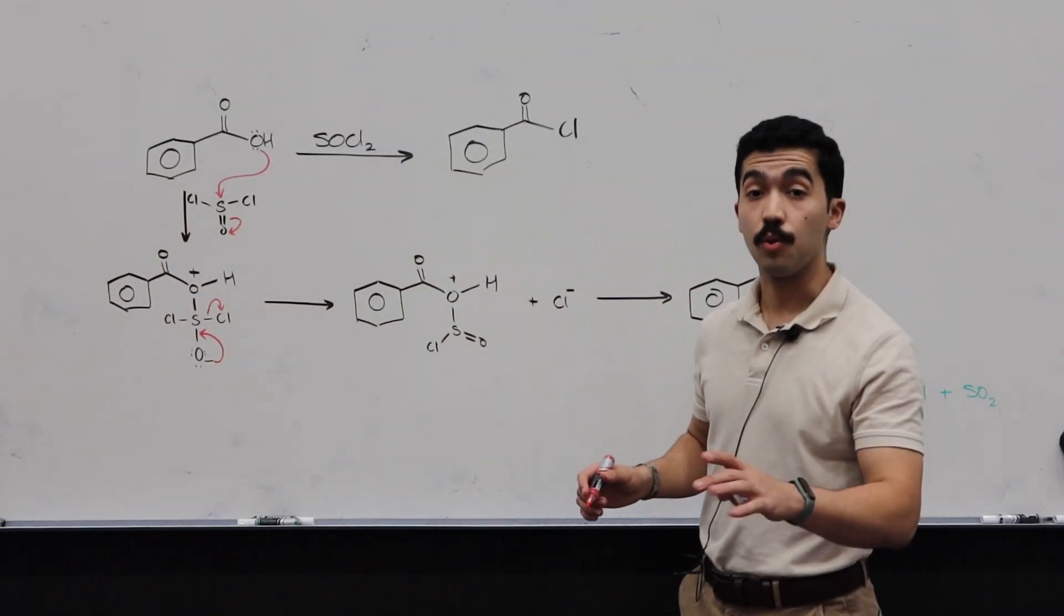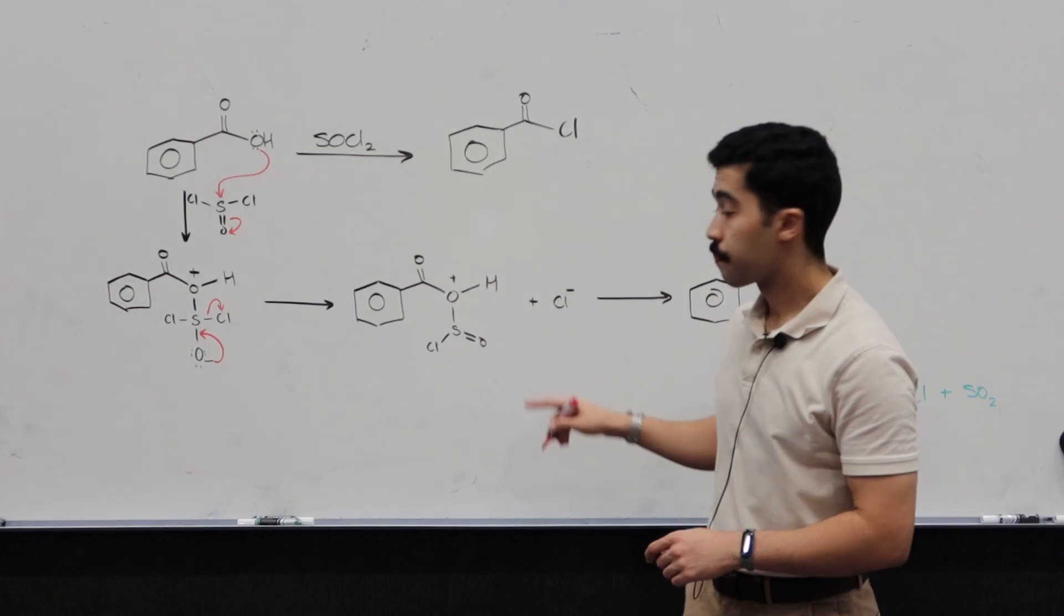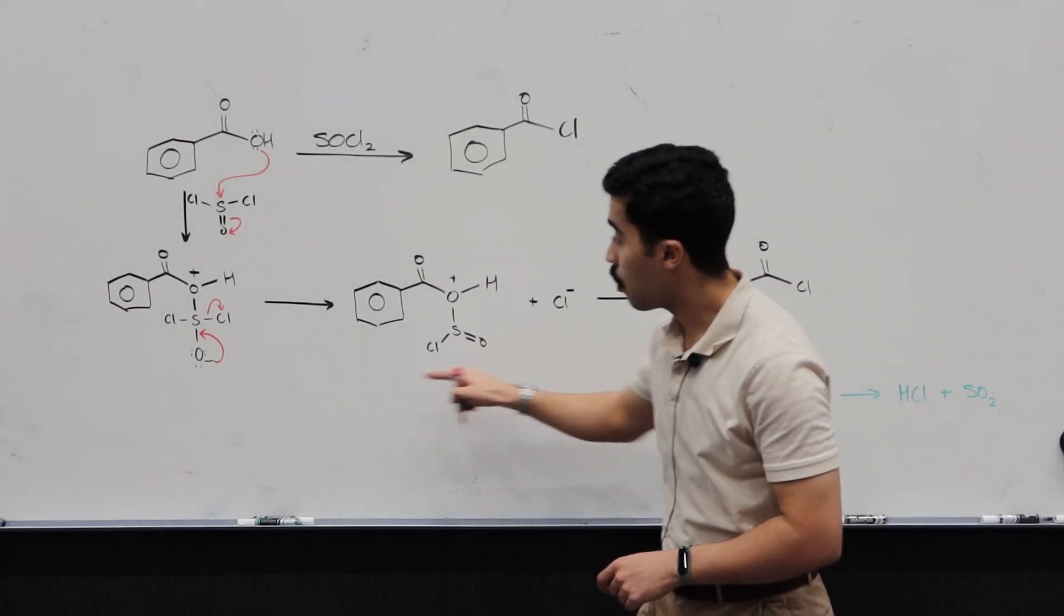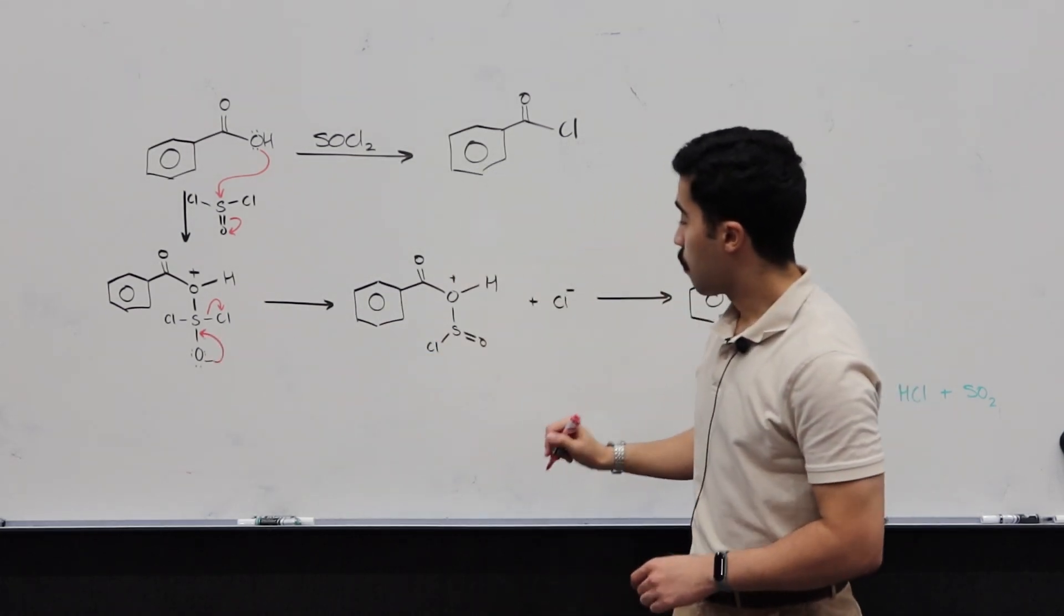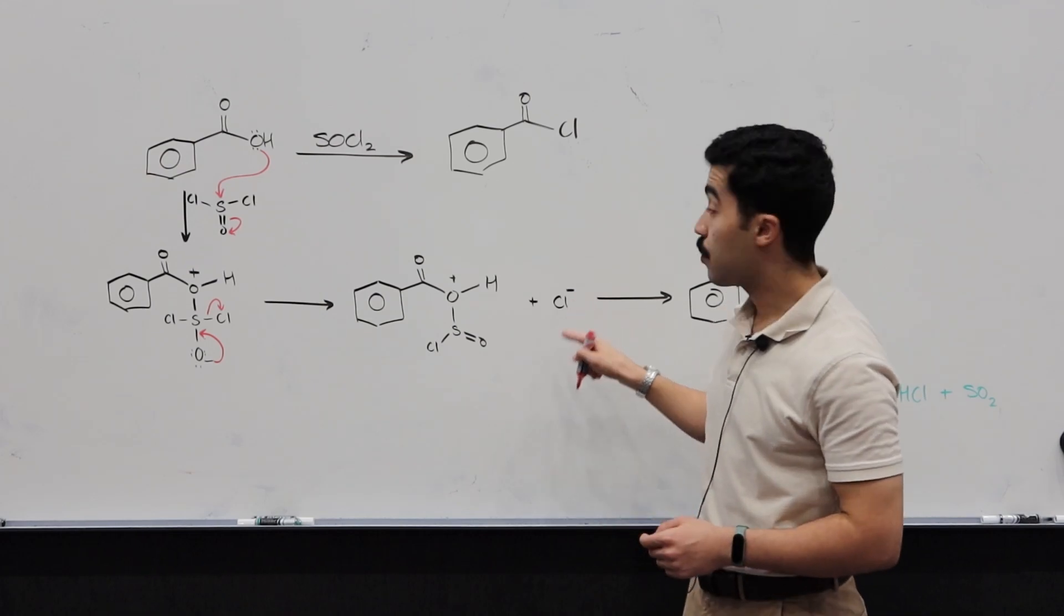What that does is that kicks out a Cl-. So now we have Cl- in solution, right there. We have our S=O that we just built here. Now, what this Cl- is going to do, it's going to come in and attack this electrophilic carbon.